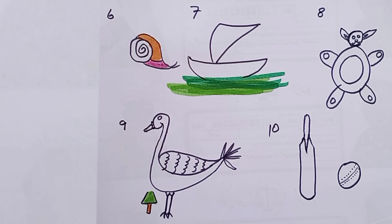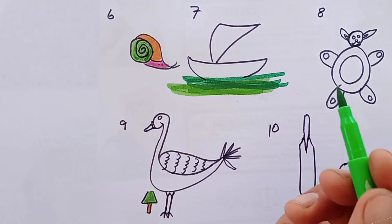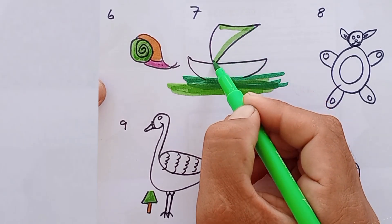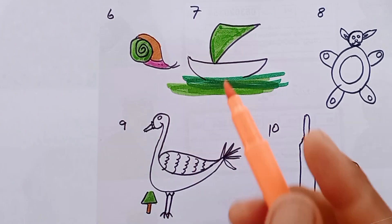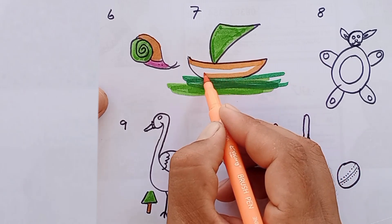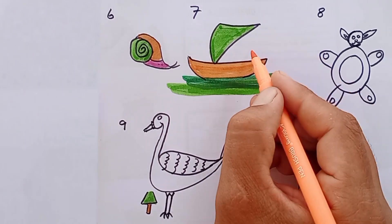Quackers the duck lived in a pond with her feathered friends. She loved to swim and play in the water. One day, Quackers found a shiny coin at the bottom of the pond. She was so excited, she decided to use the coin to buy food for all her friends.